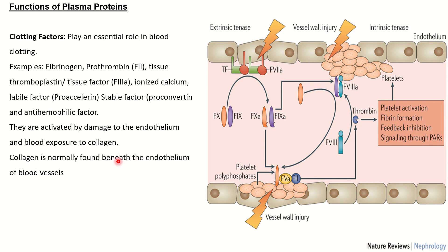To expand on coagulation factors — what really happens? Let's say we have an injury, a cut, and this leads to injury of the blood vessel. When the blood oozes out and there is exposure to calcium ions, this leads to a cascade of reactions. It will lead to platelet activation, and then they begin the coagulation cascade, which leads to fibrin formation.